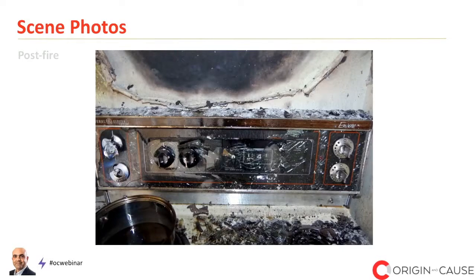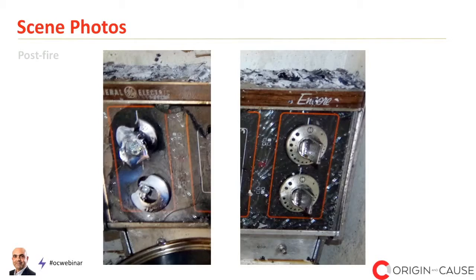Here is an overall view of the control area for the electric range. You'll notice more damage on the left side than the right side. Close-up photographs show the controls on the left side with melting, whereas on the right side the controls are completely intact and unaffected by heat damage.